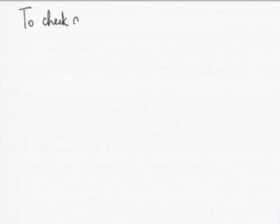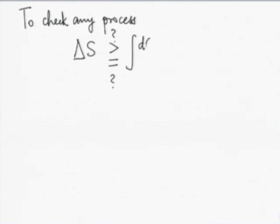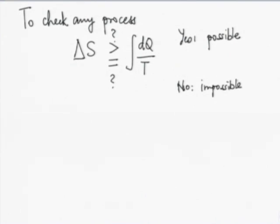To check any process, we have to determine ΔS for that process and check whether it is greater than or equal to ∫dq/T. If yes, the process is possible; if no, the process is impossible. If equality holds, the process is possible and reversible. If the greater-than condition holds, the process is possible but irreversible.